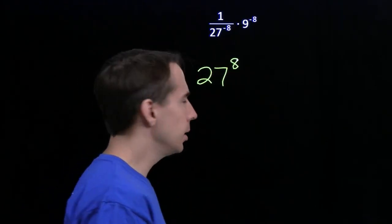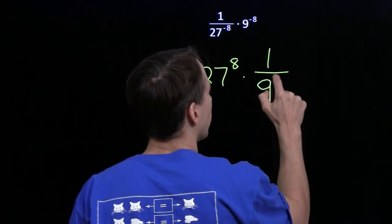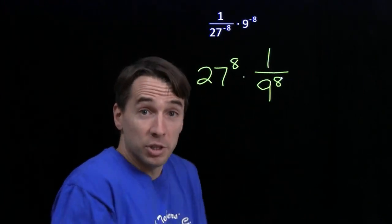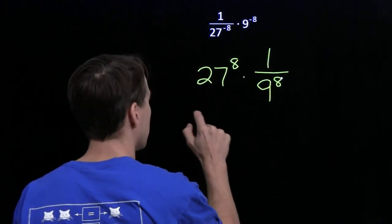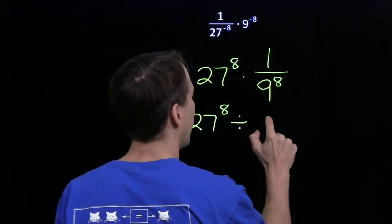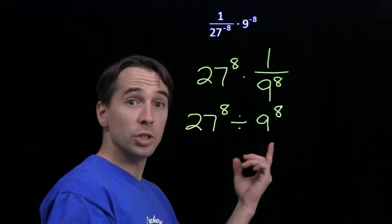And then 9 to the minus 8, well, we know how to deal with negative powers. That's just 1 over 9 to the 8th. And now while we're multiplying by a reciprocal, that means division, so this is just 27 to the 8th divided by 9 to the 8th.